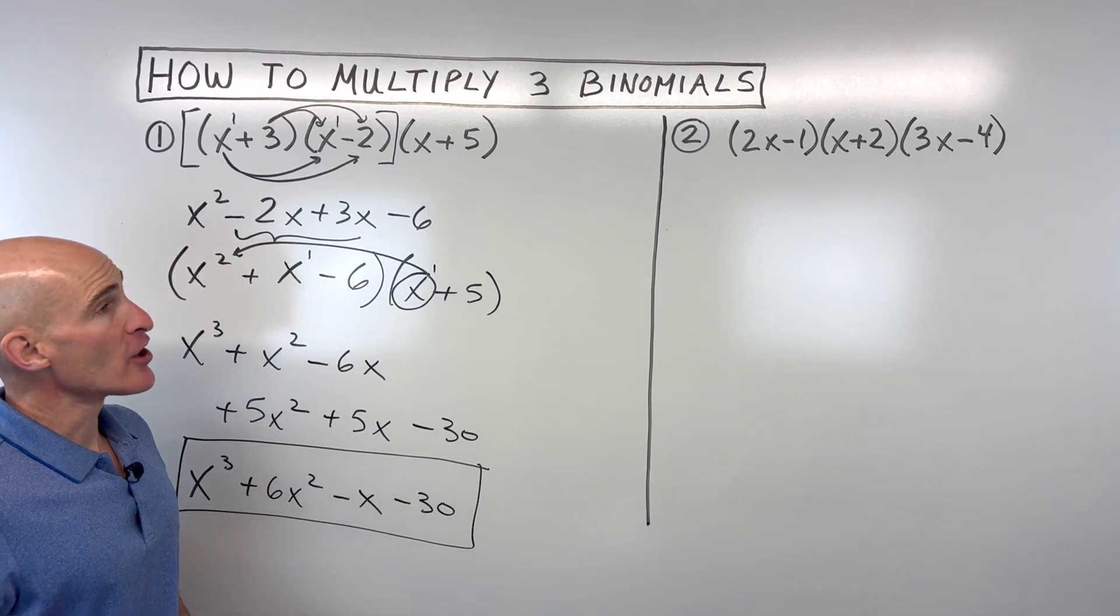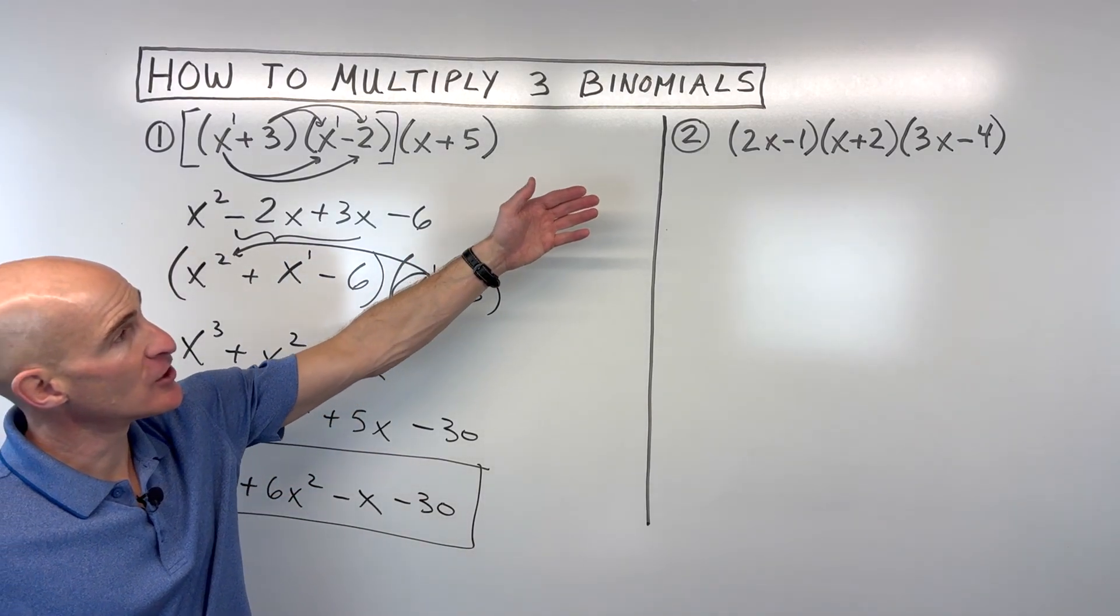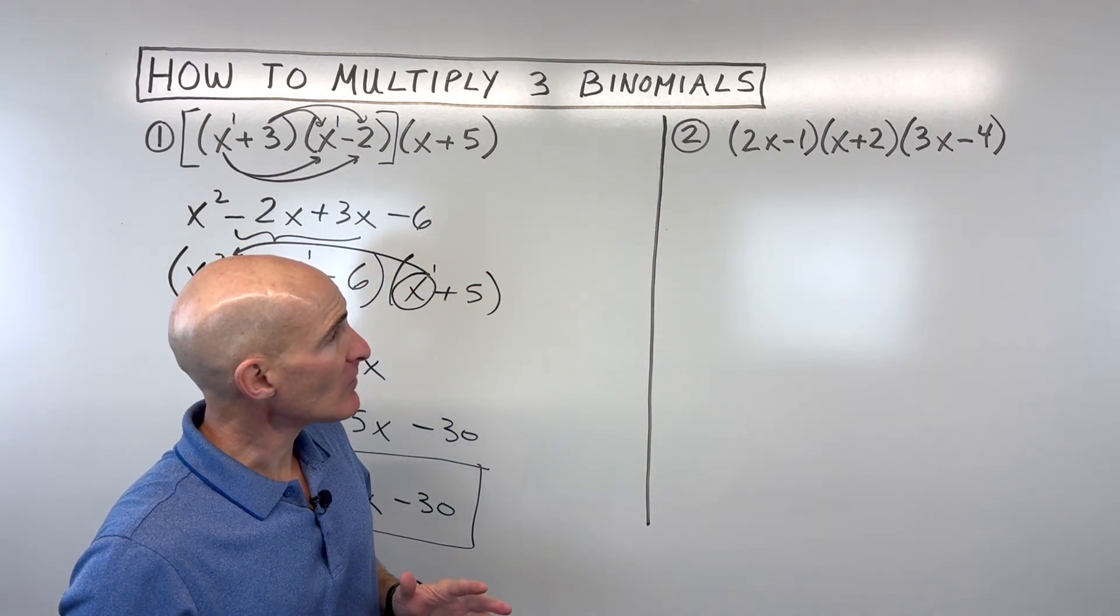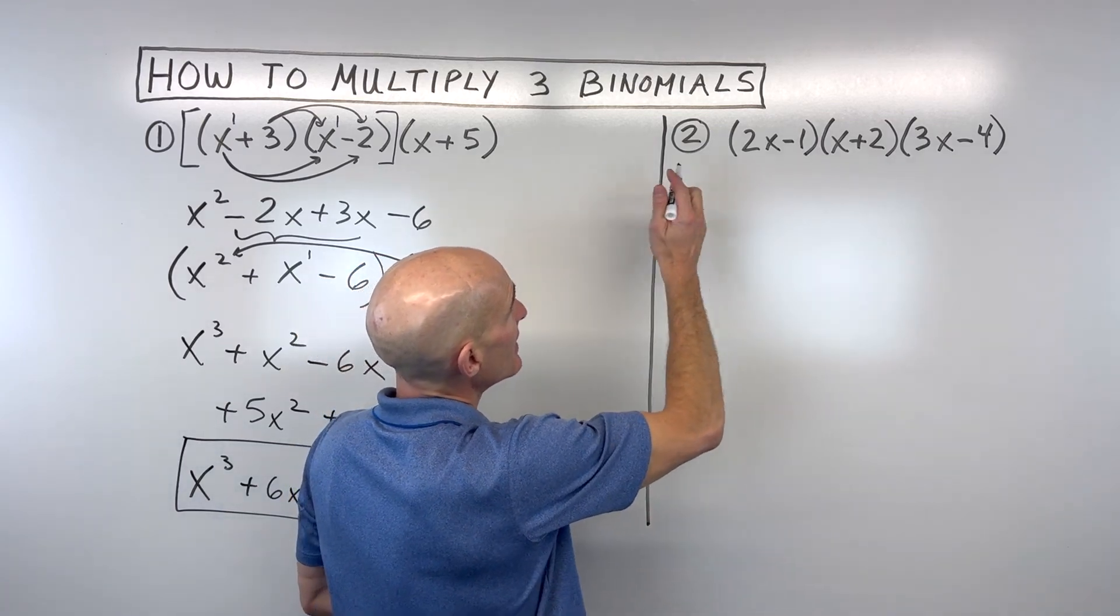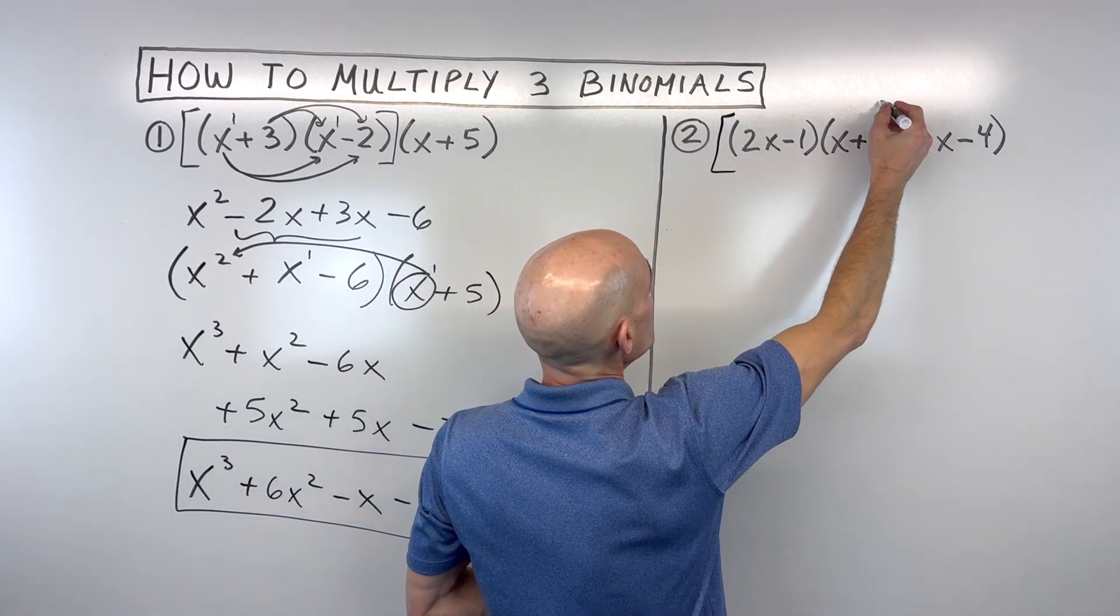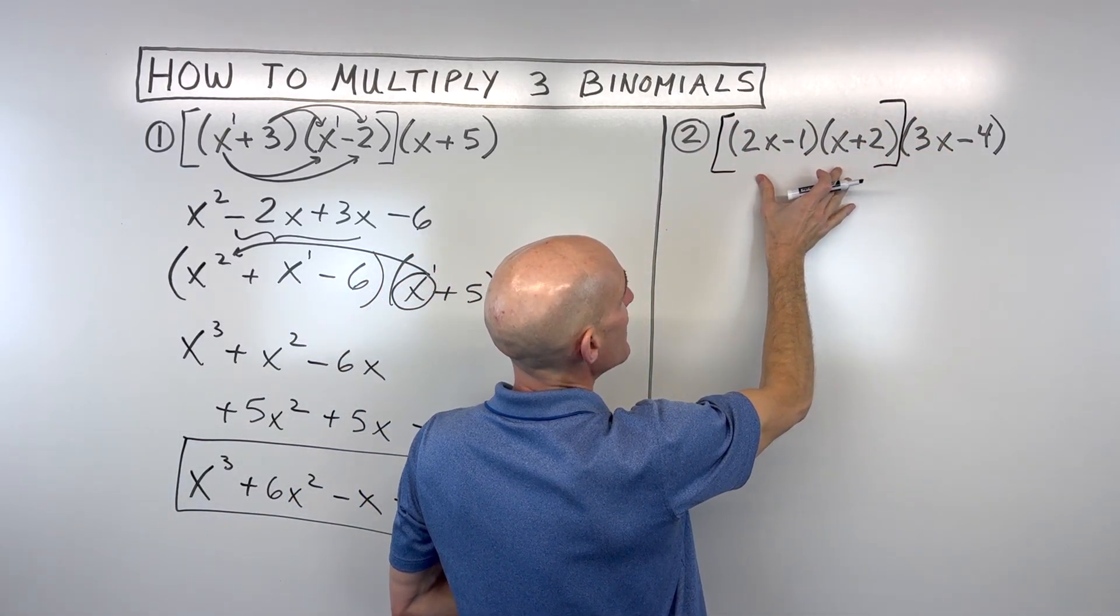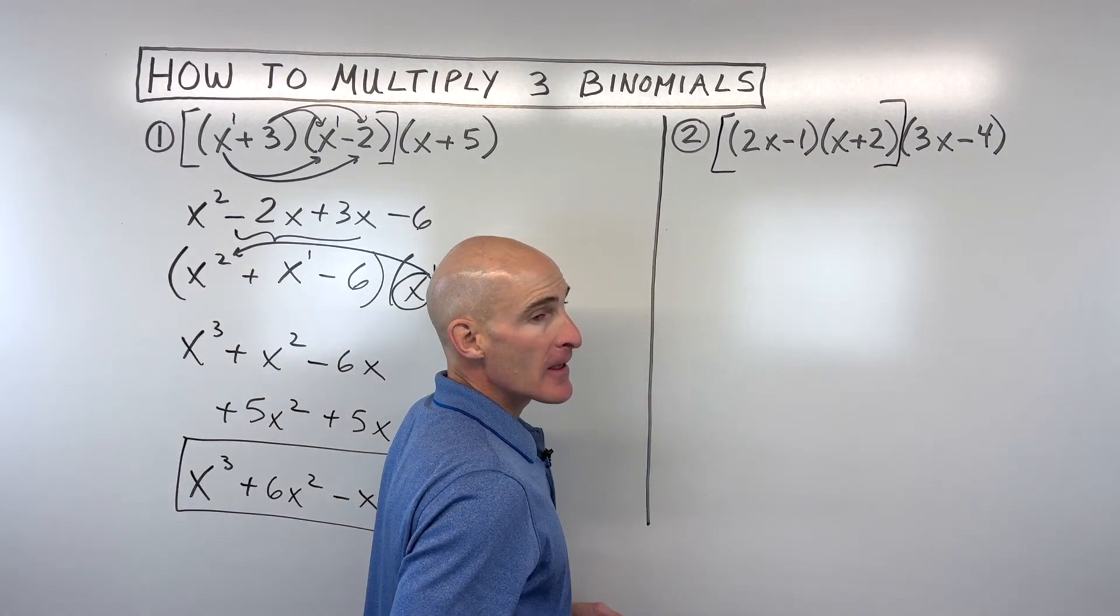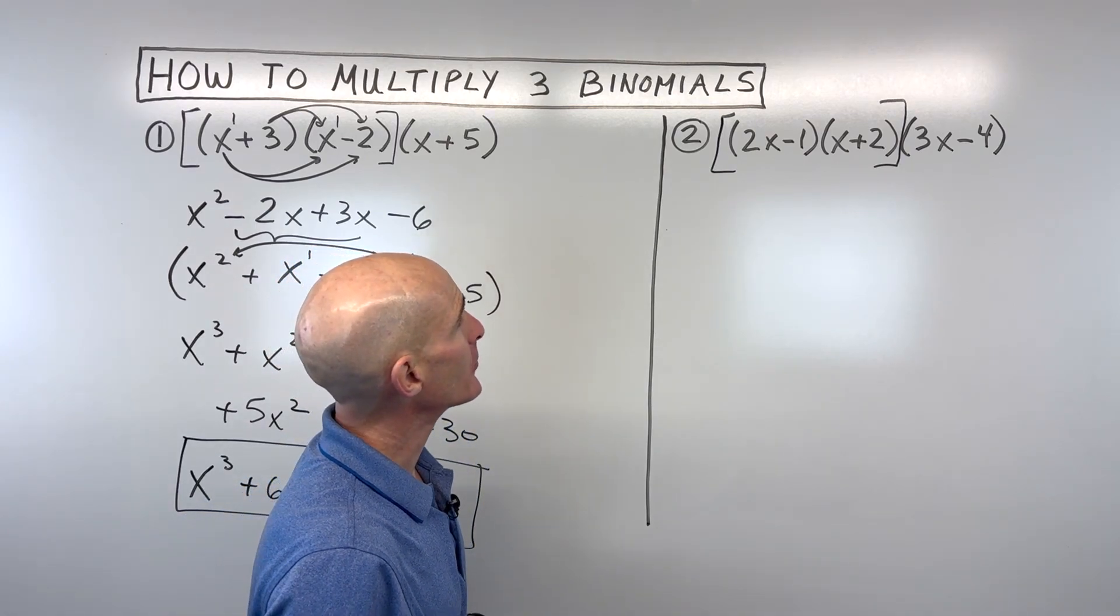So let's take a look at another example. See if you can pause the video and try number 2 here, and we'll go through it together. Now, if I was going to do it, I would do the same thing I did on this first example. I'd multiply these two binomials here on the left together first. You could do these two first, or the first and the third. It doesn't matter, but you're just going to take two binomials and multiply them together.